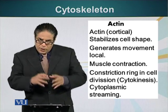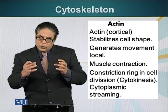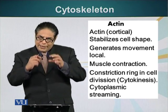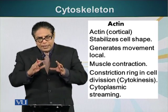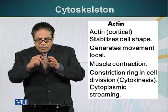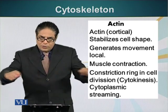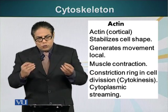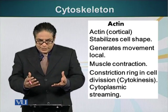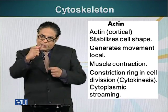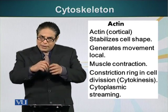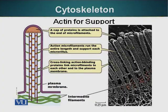Actin is also responsible for splitting one cell into two. It is a ring of actin filaments that forms in the center of a dividing cell. Think of a ball of dough — if you run a string around it and stretch the string, the ball splits into two. This is essentially what happens after chromosomes have separated: the ring of actin filaments contracts and splits the cell into two.